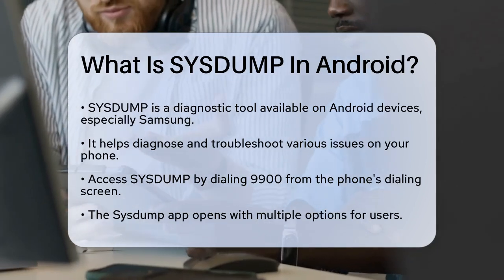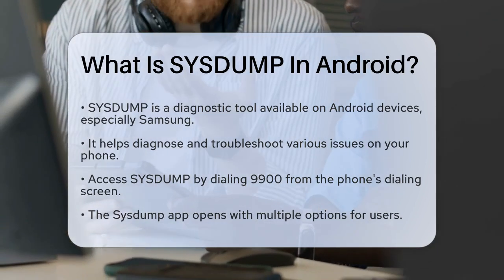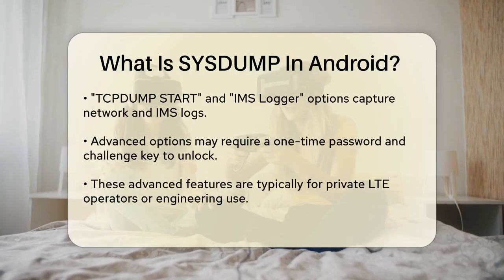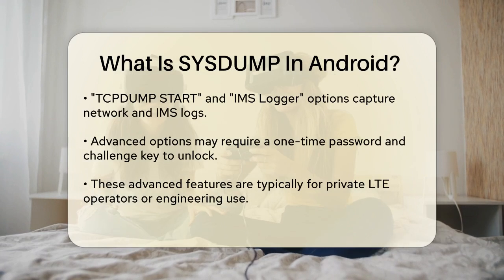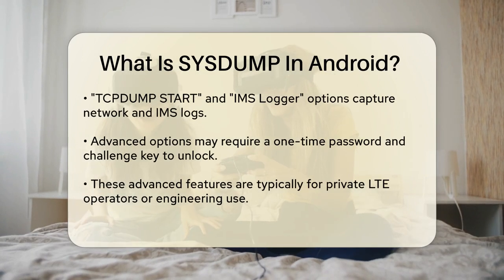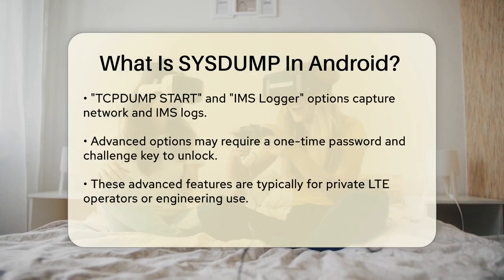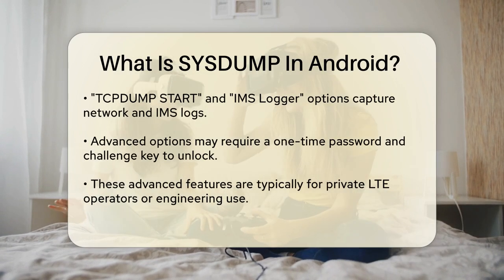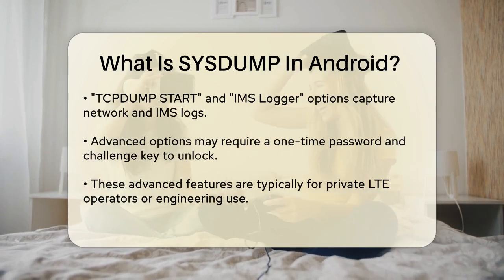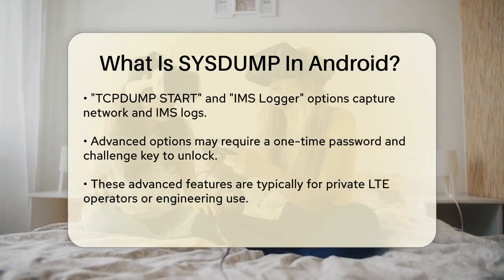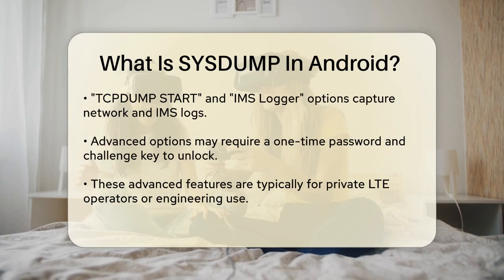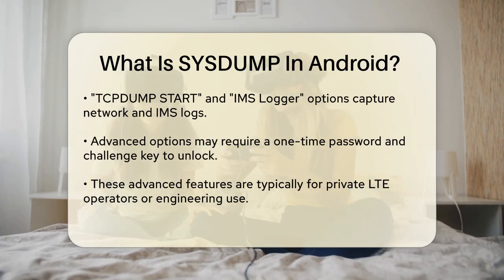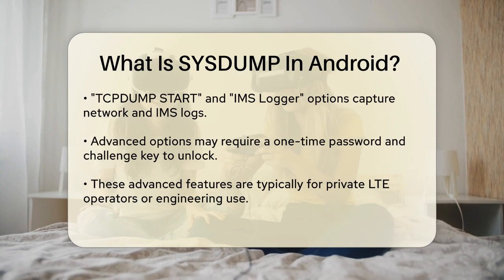Once you're in the SysDump app, you have several options at your disposal. For instance, you can use the TCP dump start option and the IMS logger to capture network and IMS (IP Multimedia Subsystem) logs. However, these advanced options are usually grayed out and require a one-time password and a challenge key to unlock them, as they are typically reserved for private LTE operators or engineering purposes.